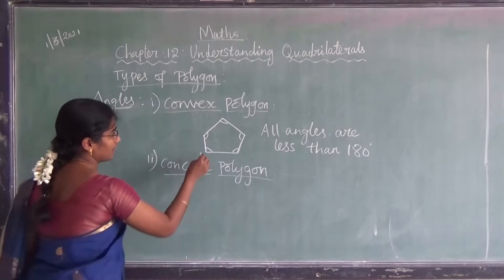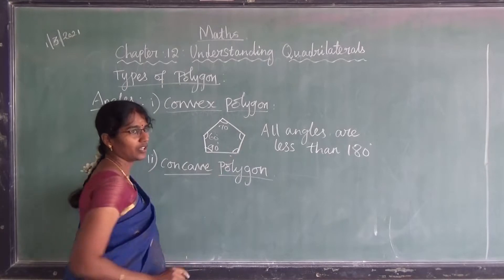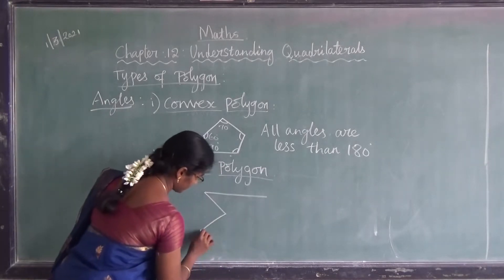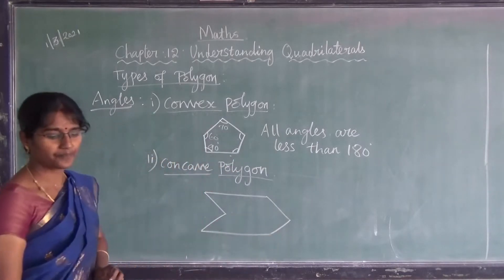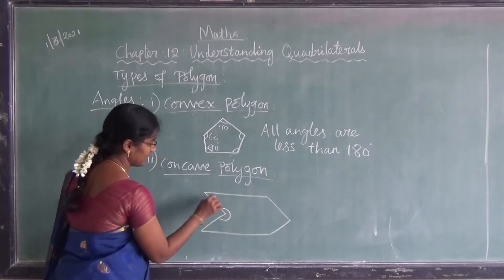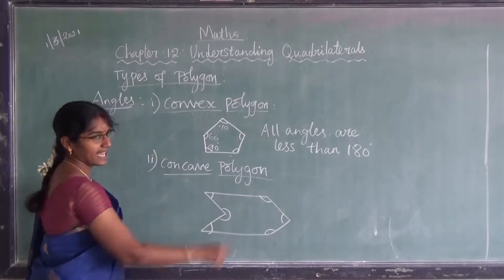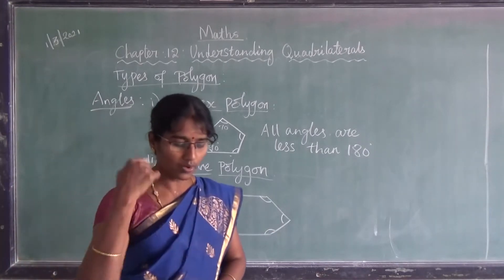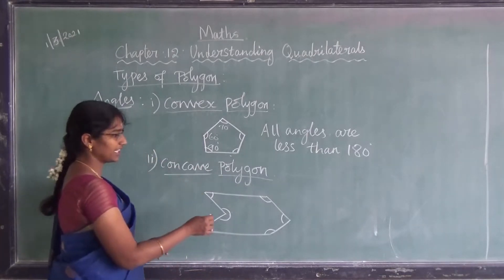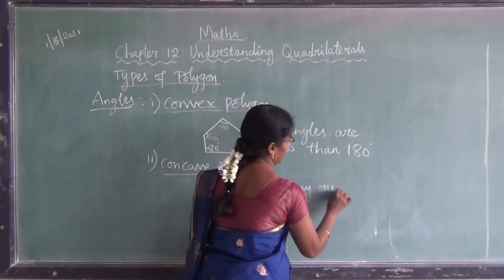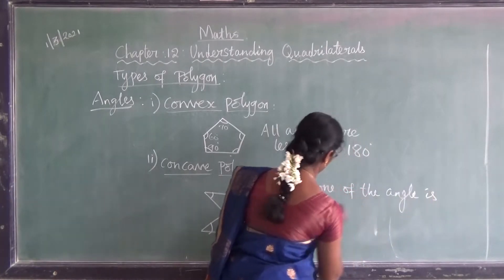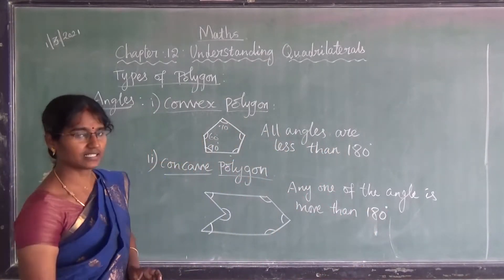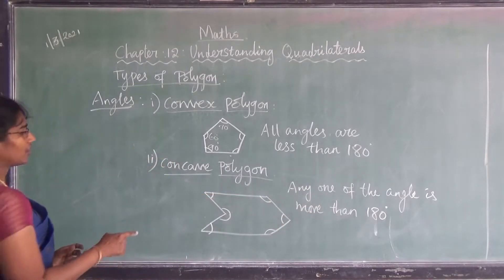It may be 90, 60, 70, or 80 degrees — all the angles measured must be less than 180 degrees. For a concave polygon, if we use a protractor and measure the angles — say totally six angles — if any one of the angles is more than 180 degrees, such polygons are called concave polygons. More than 180 degrees means we call it a reflex angle.